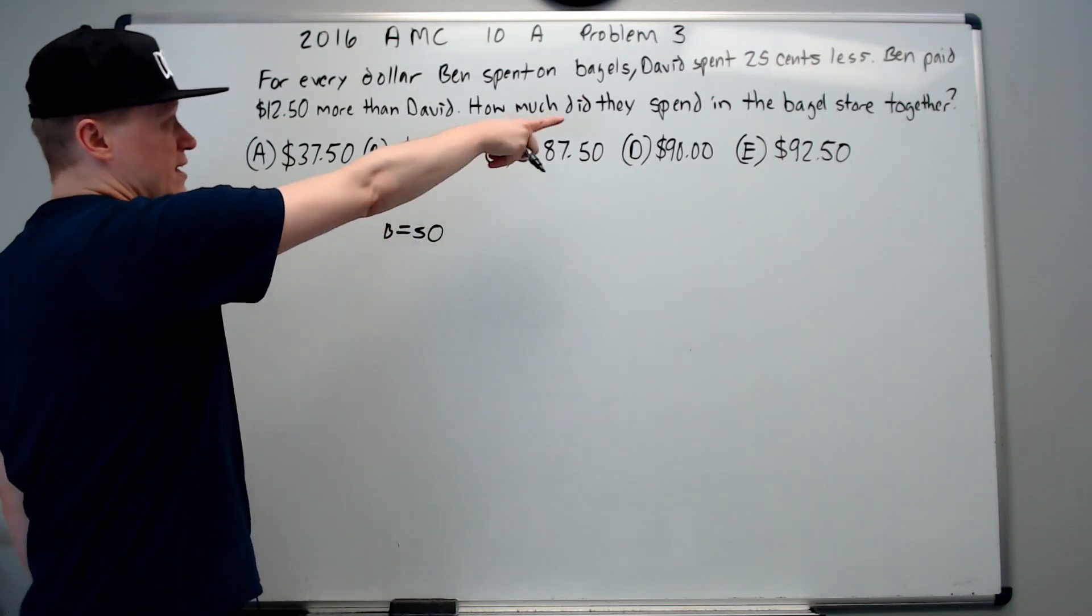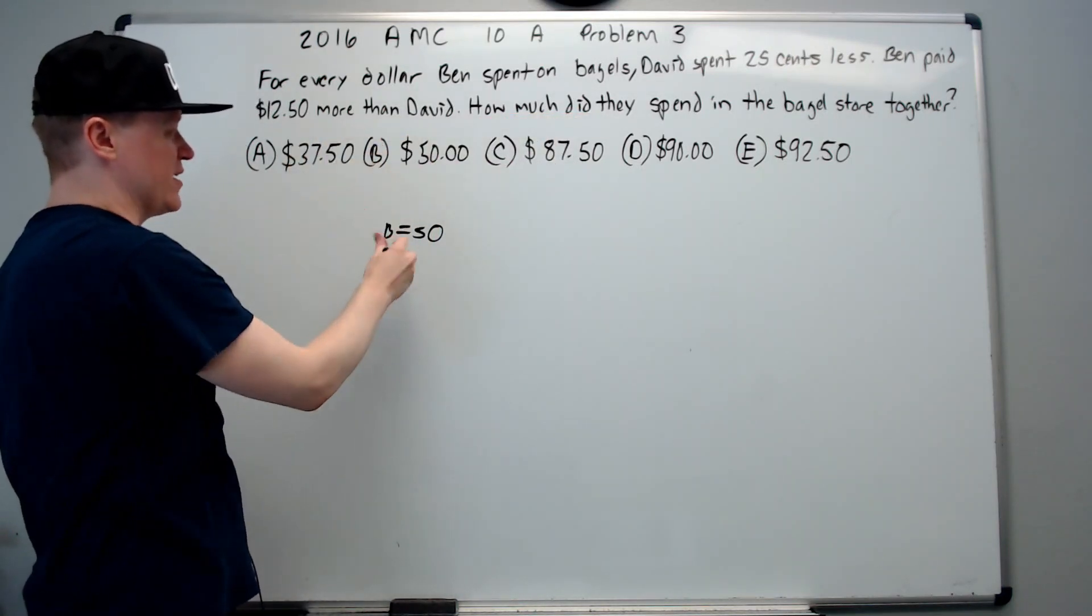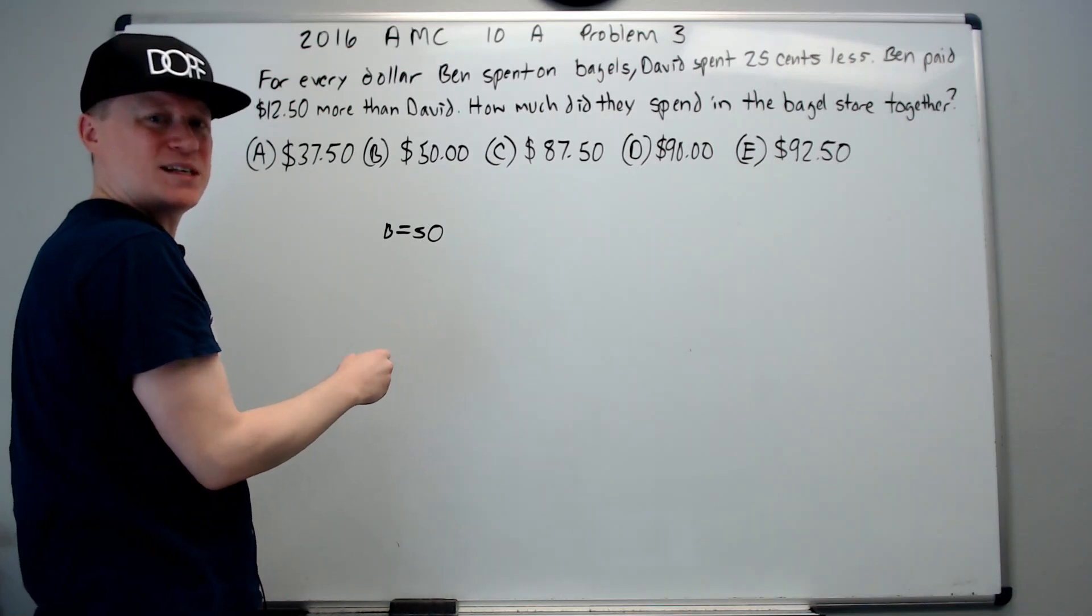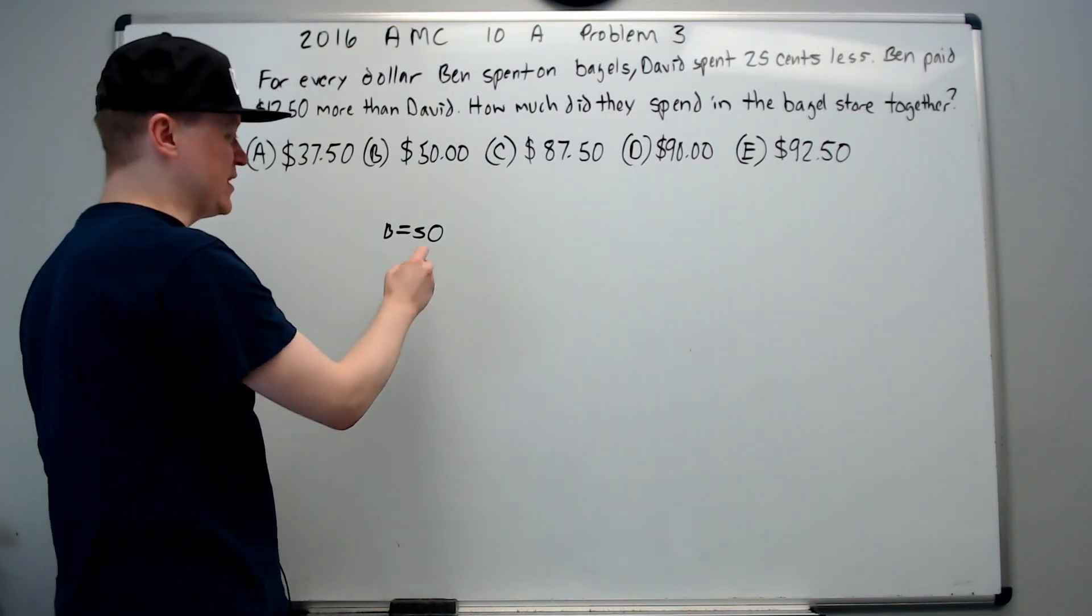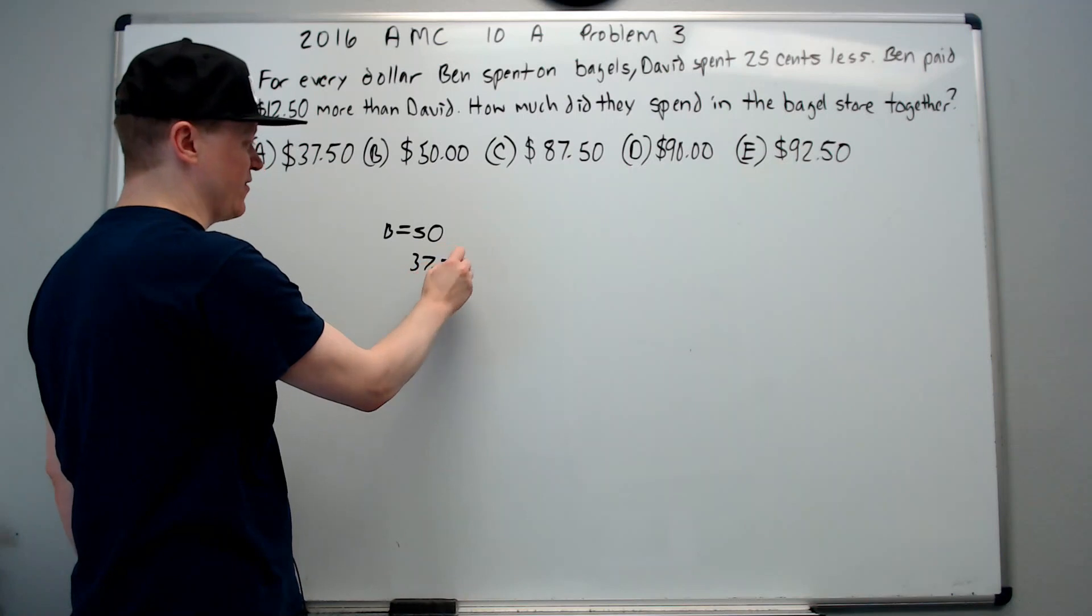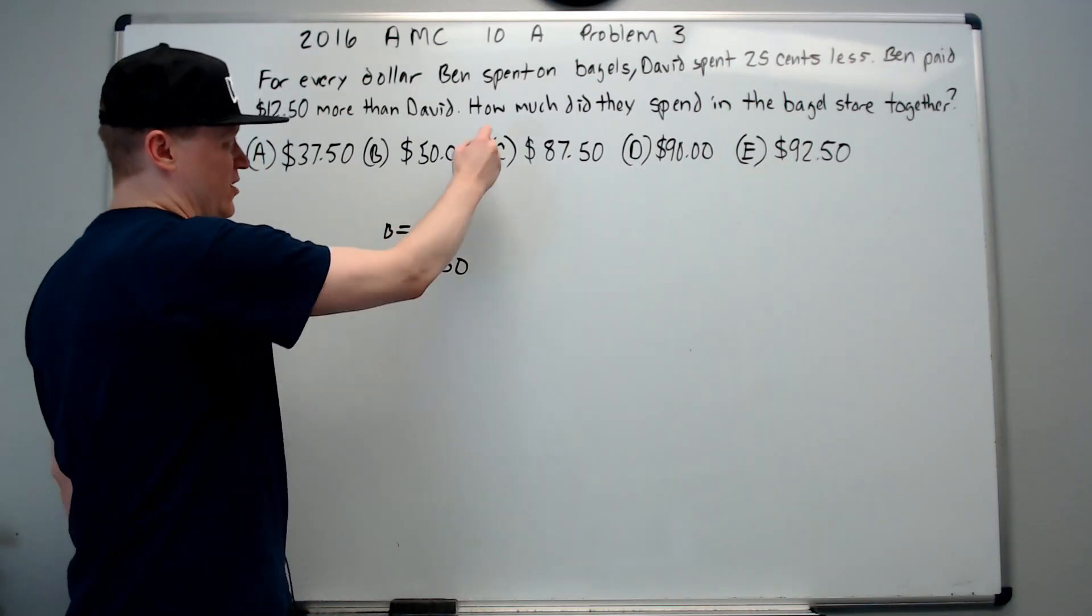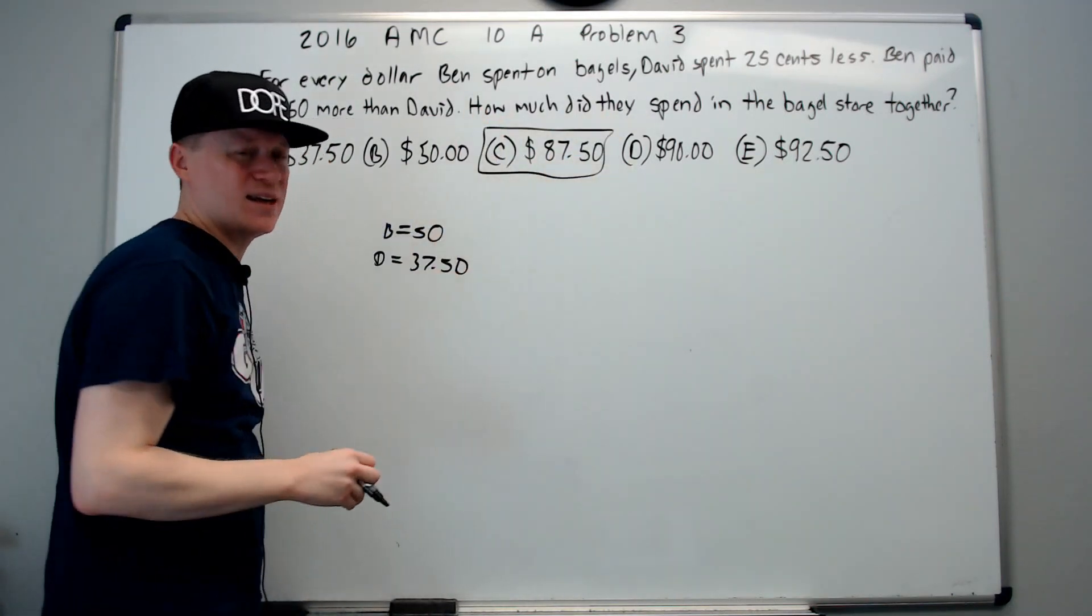We know that he spent $12.50 more than David, so just subtract $12.50. Subtracting 12 gives 38. Subtracting 50 cents gives $37.50 for David. Add those, and that gives you C.